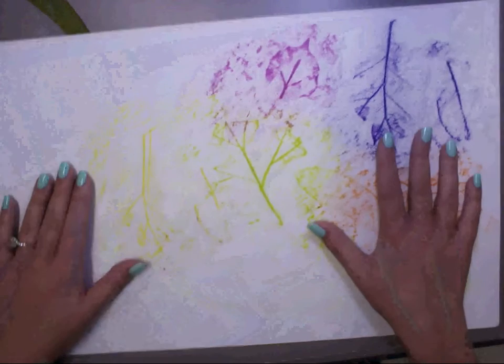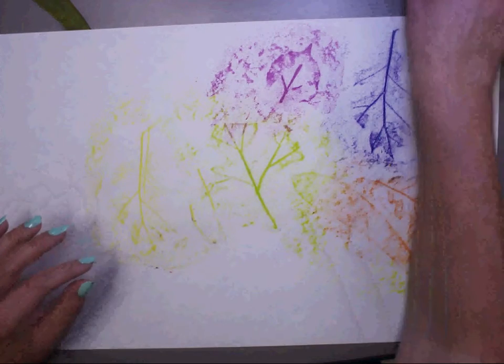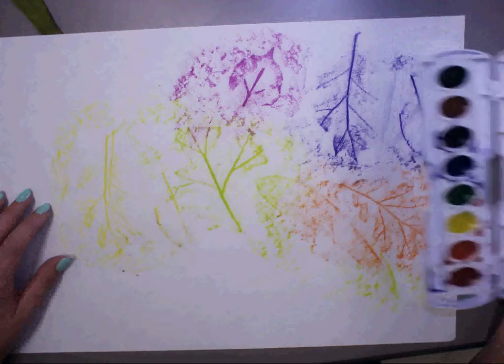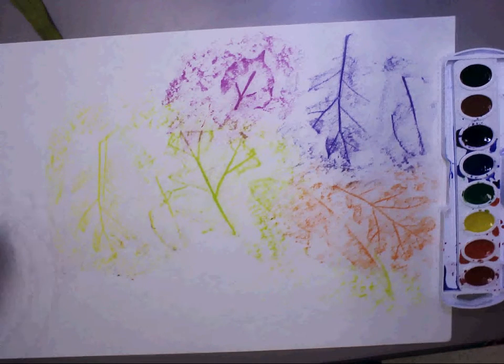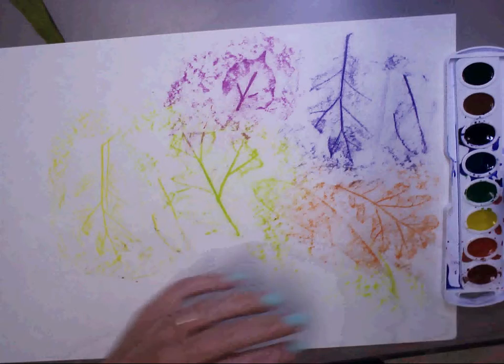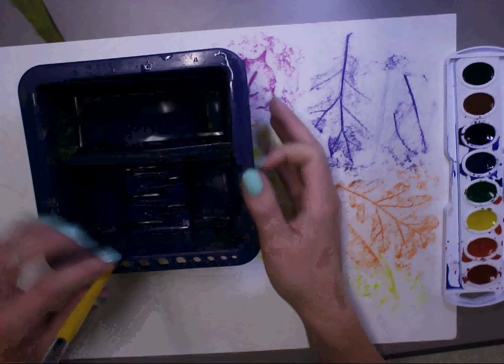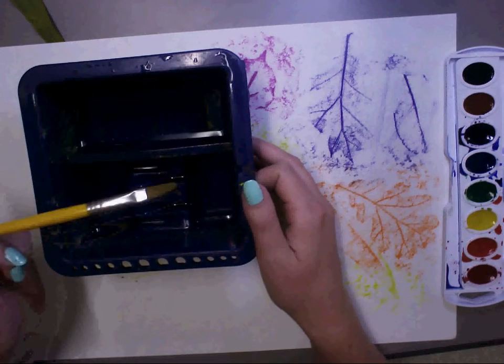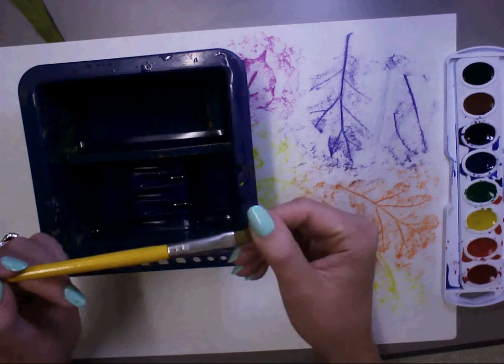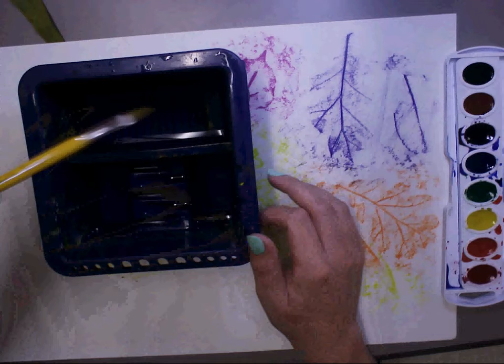So that way now we can talk about watercolor. So when we're done with the crayon rubbings, you're going to just put your leaves to the side, put your paper back down in front of you. You're going to have a watercolor palette and you're going to share the watercolor palette with the person sitting next to you.